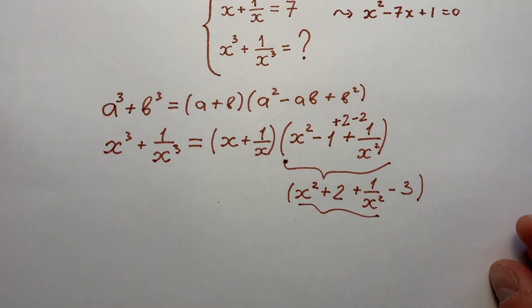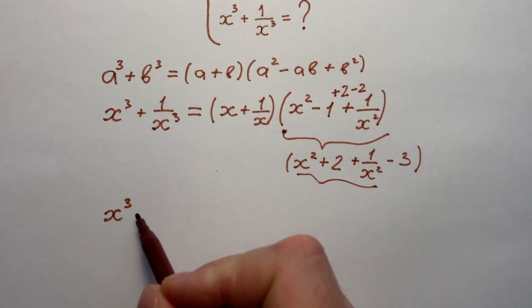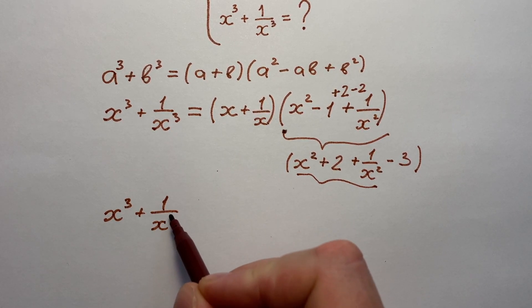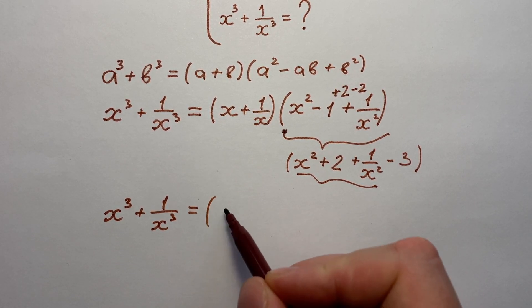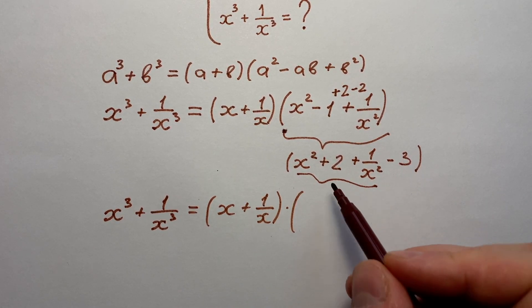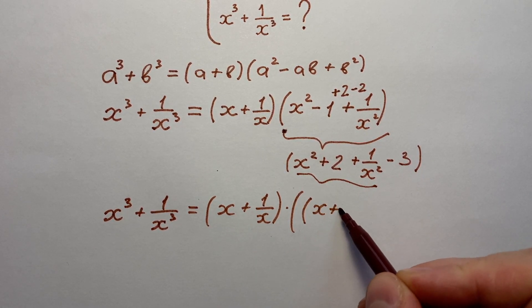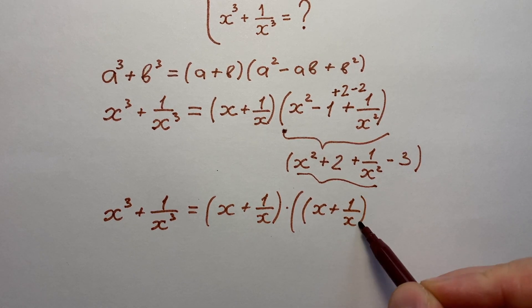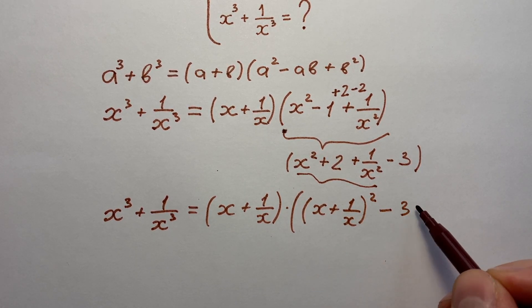So we can finally write this formula like x³ + 1/x³. It equals to (x + 1/x)² - 3.